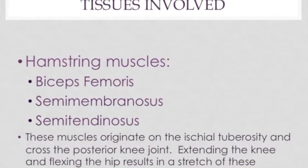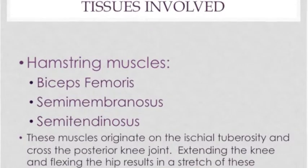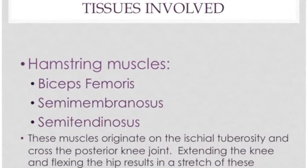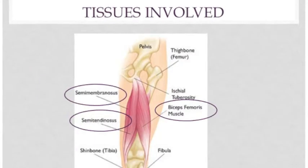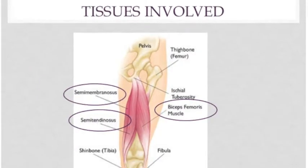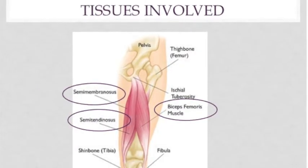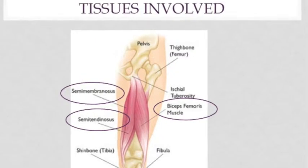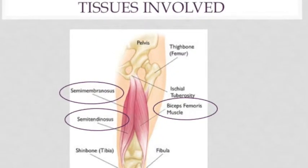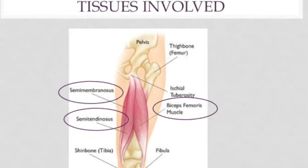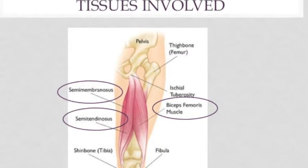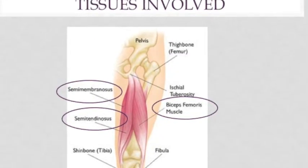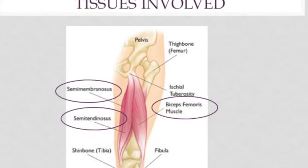These muscles originate on the ischial tuberosity and cross the posterior knee joint. Extending the knee and flexing the hip results in a stretch of these tissues.